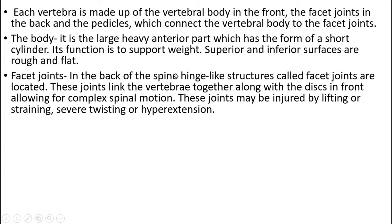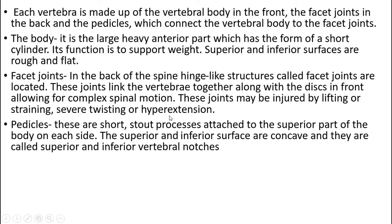The facet joints — in the back of the spine there are hinge-like structures called facet joints. These joints link the vertebrae together along with the disc in front, allowing for complex spinal motion. These joints may be injured by lifting or straining, severe twisting, or hyperextension.